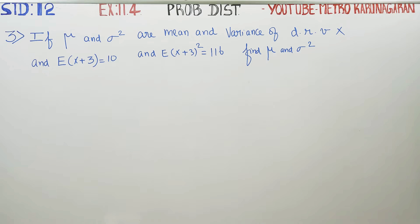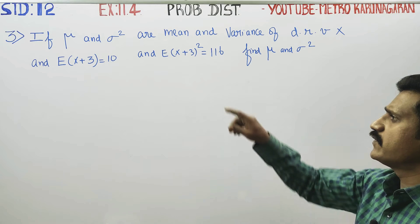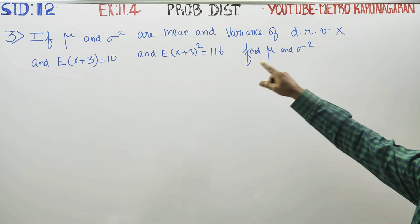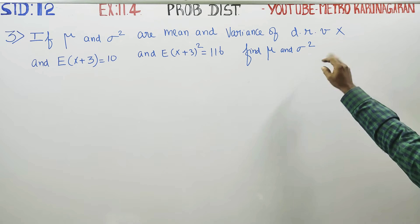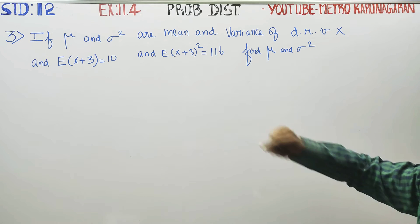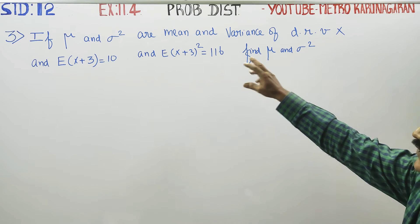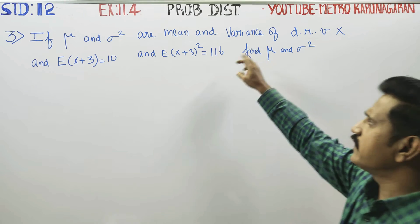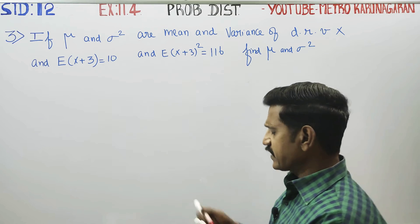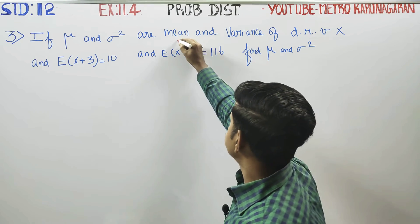Dear 12th standard students, in exercise number 11.4, sum number 3, we want to find the mean and variance of a discrete random variable. How do we find the mean and variance of a discrete random variable?